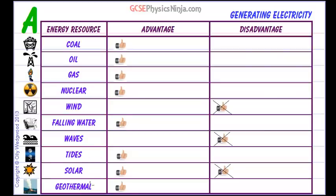Tidal, solar, and geothermal are all quite reliable. Tides happen twice a day, so we know we can generate electricity at those times. Unfortunately, wind, waves, and solar energy in cooler countries are less reliable. Solar energy is reliable only in hotter countries, but not so reliable in cooler countries. Wave power doesn't always produce large waves to make the floating generators work, and turbines don't always have wind to turn them.